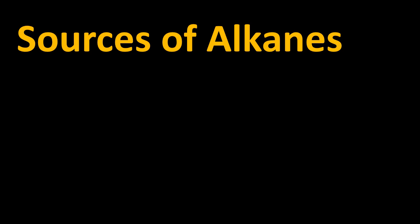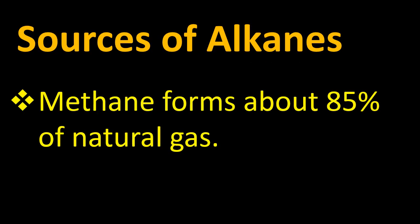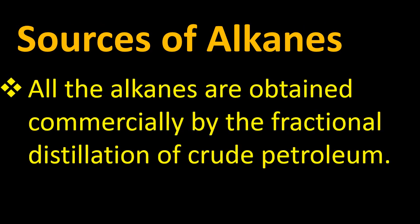What are the sources of alkanes? The main sources are petroleum and natural gas. As we know, they are hydrocarbons obtained from the earth. Methane forms 85% of natural gas, which is also known as sui gas, which we use in our homes for cooking. Alkanes are also obtained from crude petroleum by the process of fractional distillation.